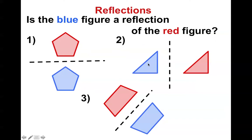If we look at number two, this is also not a reflection, because we have the long side of the triangle far away from the line of reflection, but on the other side the long side of the triangle is close to the line of reflection. This, once again, is a translation. Number three would be a reflection — the long side of the trapezoid is close to the line of reflection on both sides.